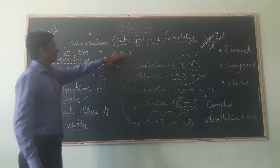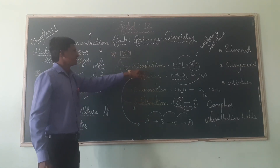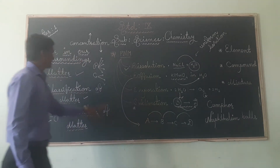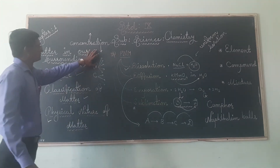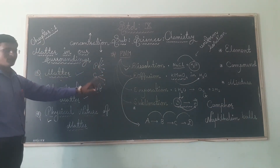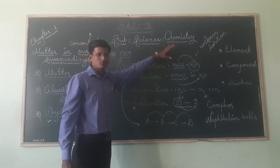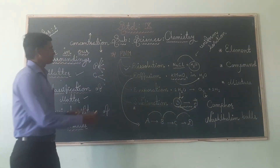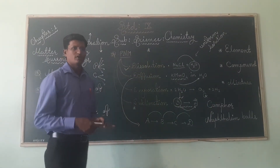Today we have discussed the four main processes of the physical nature of matter: dissolution, diffusion, evaporation, and sublimation. We also covered what is matter, the classification of matter — five physical states and three chemical states: element, compound, and mixture. The remaining topic, characteristics of matter, we will discuss in our coming video. Thank you and have a nice day.